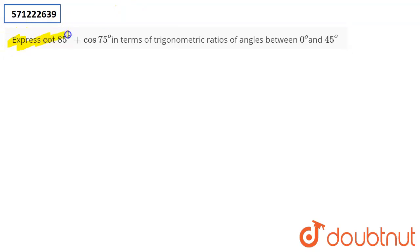express cot 85° + cos 75° in terms of trigonometric ratios of angles between 0° and 45°.